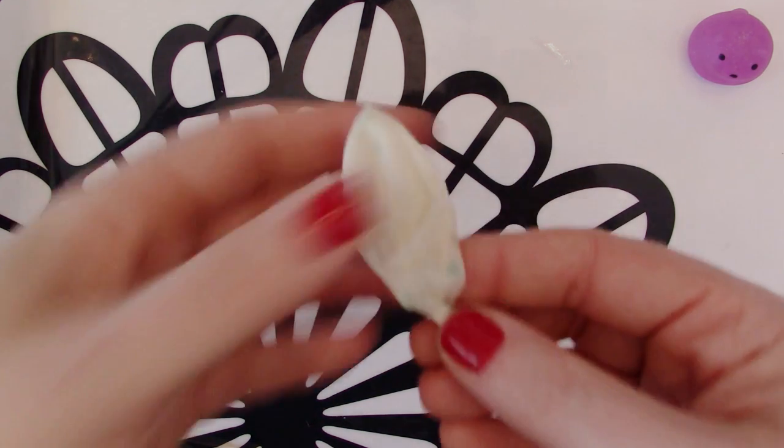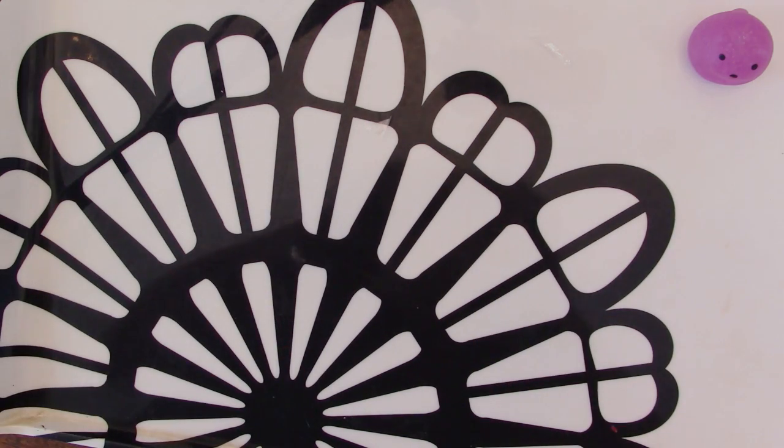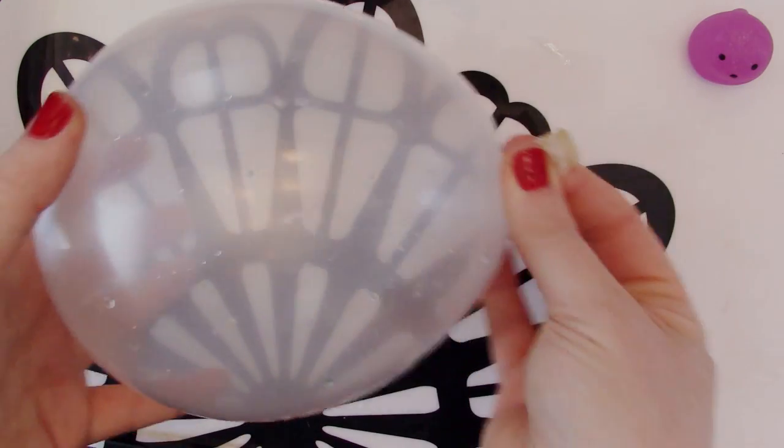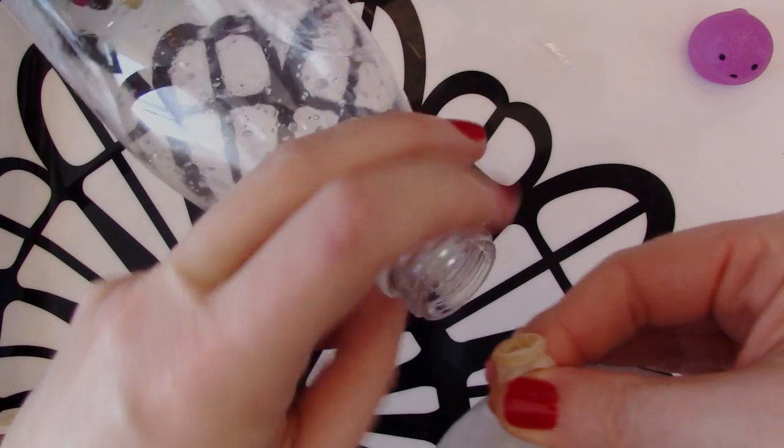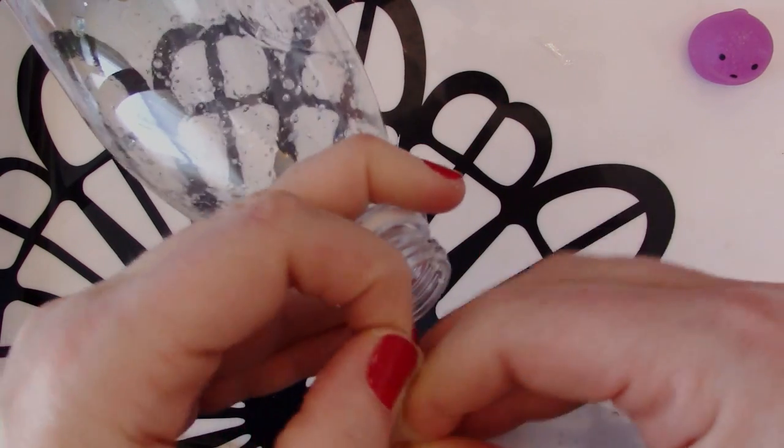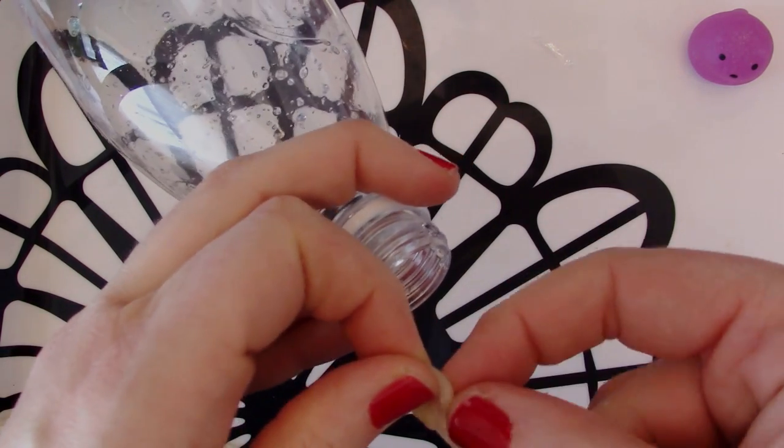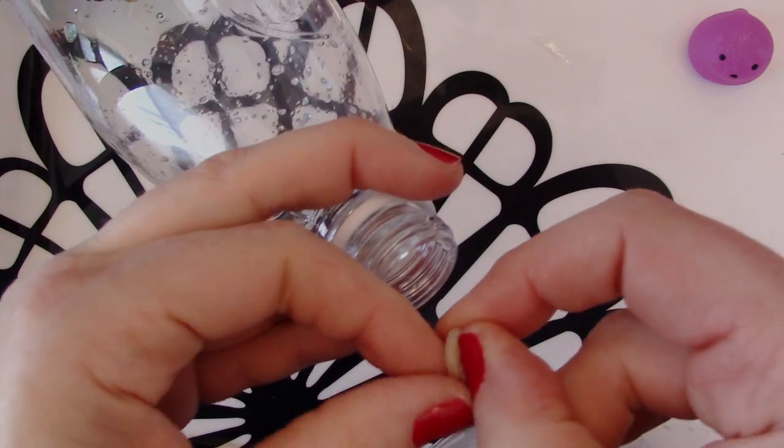Now, you want to take your balloon and blow it up so that it's a relatively medium sized balloon. And you want to keep it closed so that the air doesn't escape. And then this takes a little bit of practice, but you'll need to stretch the opening of the balloon over the bottle, the same way that you just did with the plastic bag.